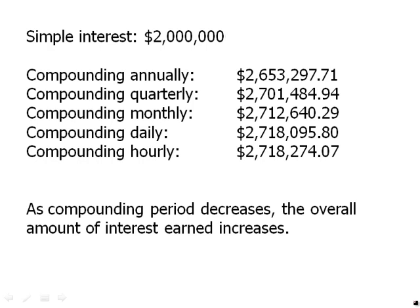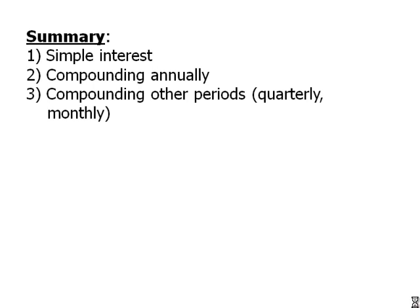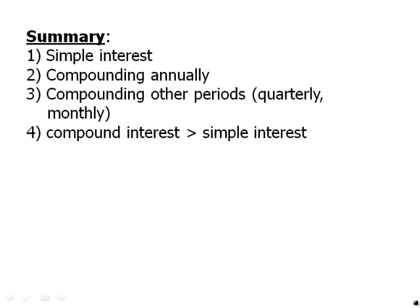In summary: we talked about simple interest — not very realistic, not likely to appear by itself, but an excellent approximation tool. We talked about compounding annually, then other periods like quarterly and monthly. One big idea is that compound interest always pays more than simple interest — especially important when you're using the simple interest approximation. And it's important to know that more compounding periods give us more money.